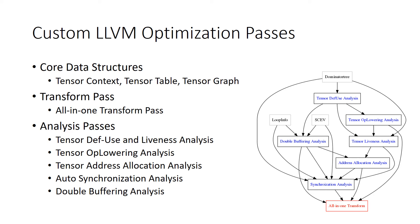We create one transformation pass — we call it an all-in-one transform pass. This transform pass will do the actual op-lowering, address allocation, synchronization, and double-buffering work. This transform pass requires the analysis pass. We need to get the analysis results such as def-use analysis, liveness, op-lowering analysis, address allocation, synchronization, and double-buffering analysis results for the transform pass. All pass dependencies are demonstrated on the right-hand side picture.